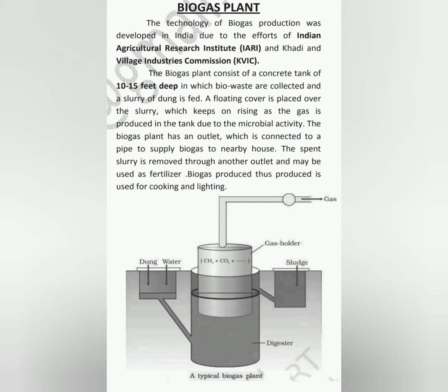The biogas plant consists of a concrete tank of 10 to 15 feet deep in which bio-waste is collected and a slurry of dung is fed.